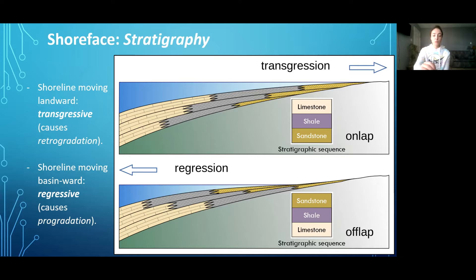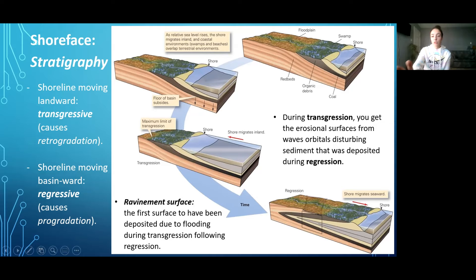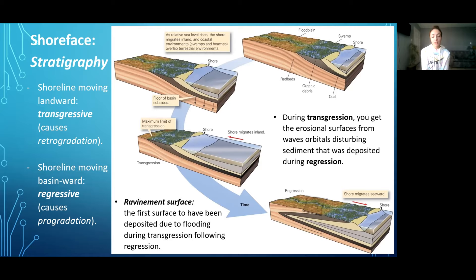You might also hear the terms retrogradation for a transgressive sequence and progradation for a regressive sequence. Because the movement of the shoreline is pretty much constant, you'll see these transgression and regression sequences consistently throughout the rock record. During transgression, you'll get erosional surfaces from wave orbitals disturbing sediment deposited during regression. The first bed deposited during the flooding of a transgressive sequence following regression may be called a ravinement surface, and the boundary between a regressive sequence following transgression may be called the maximum flooding surface.